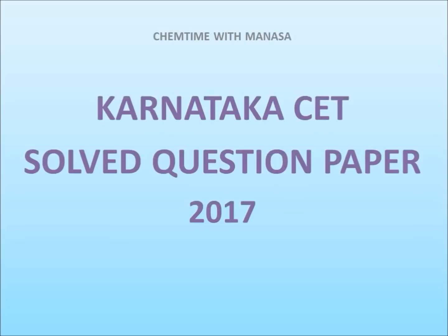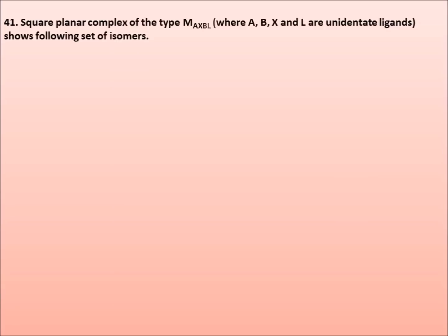The third part of the Solved Chemistry Question Paper of CET 2017. Friends, in that question paper, question number 41 is: Square planar complex of the type M-A-X-B-L where A, B, X and L are unidentate ligands shows following set of isomers.